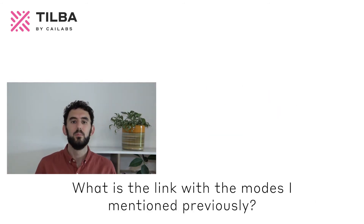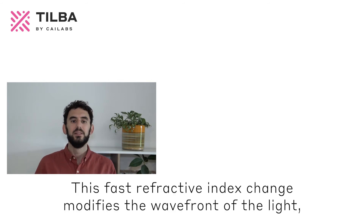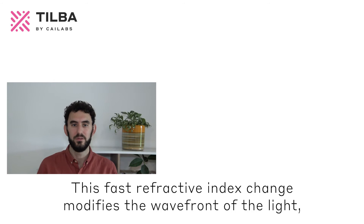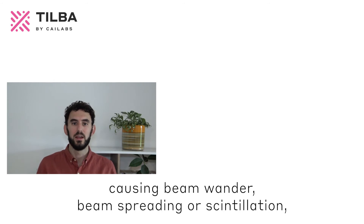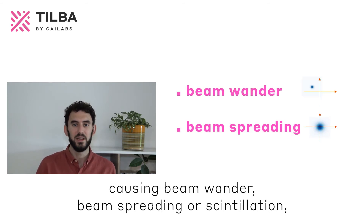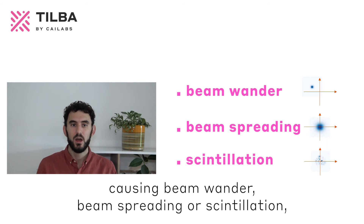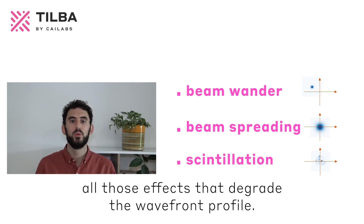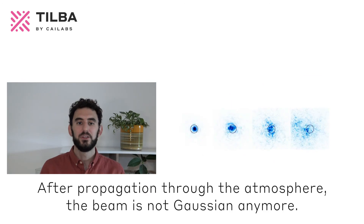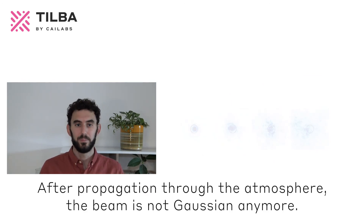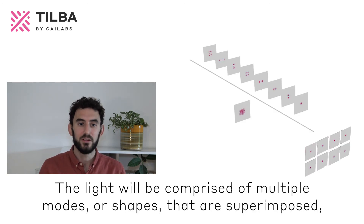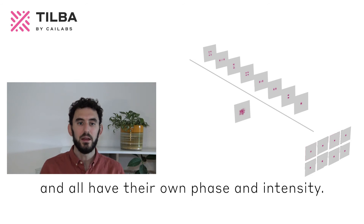What is the link with the modes I mentioned previously? This fast refractive index change modifies the wavefront of the light, causing beam wander, beam spreading, or scintillation — all those effects that degrade the wavefront profile. After propagation through the atmosphere, the beam is not Gaussian anymore. Therefore, the light will be comprised of multiple modes or shapes that are superimposed, all having their own phase and intensity.